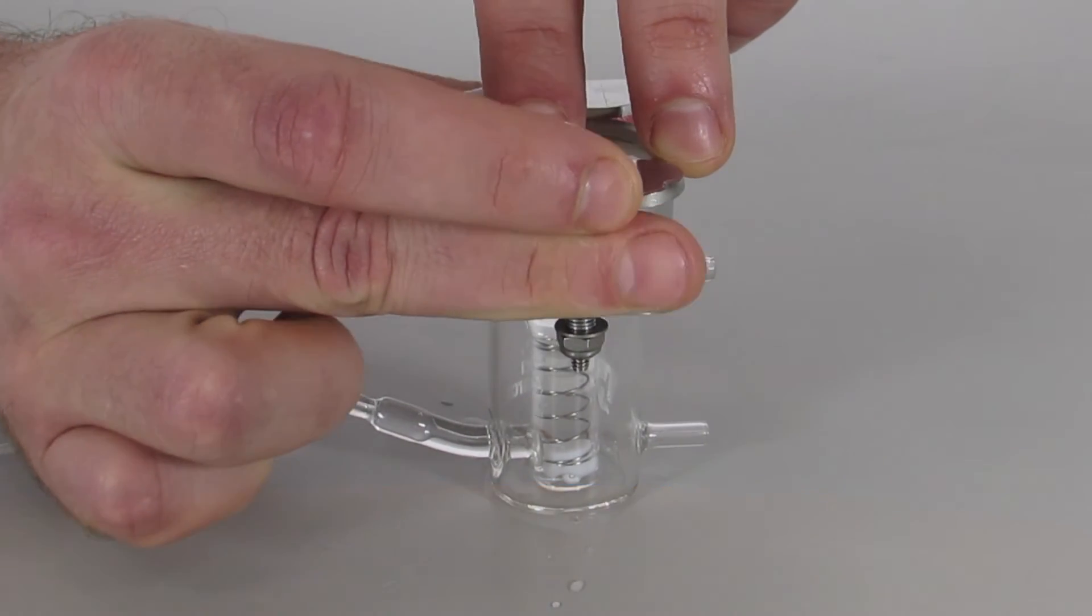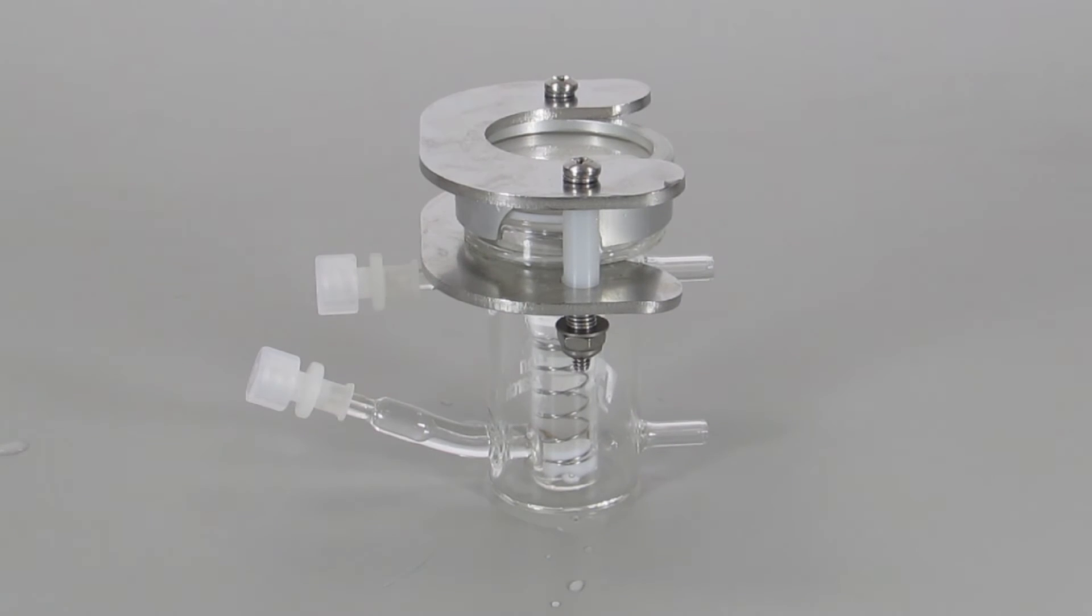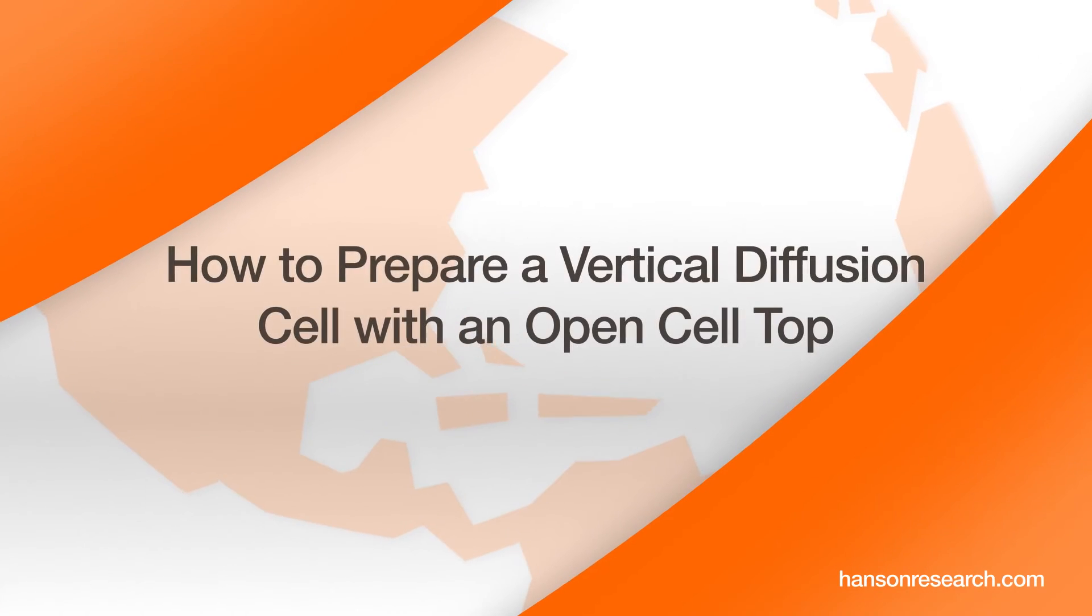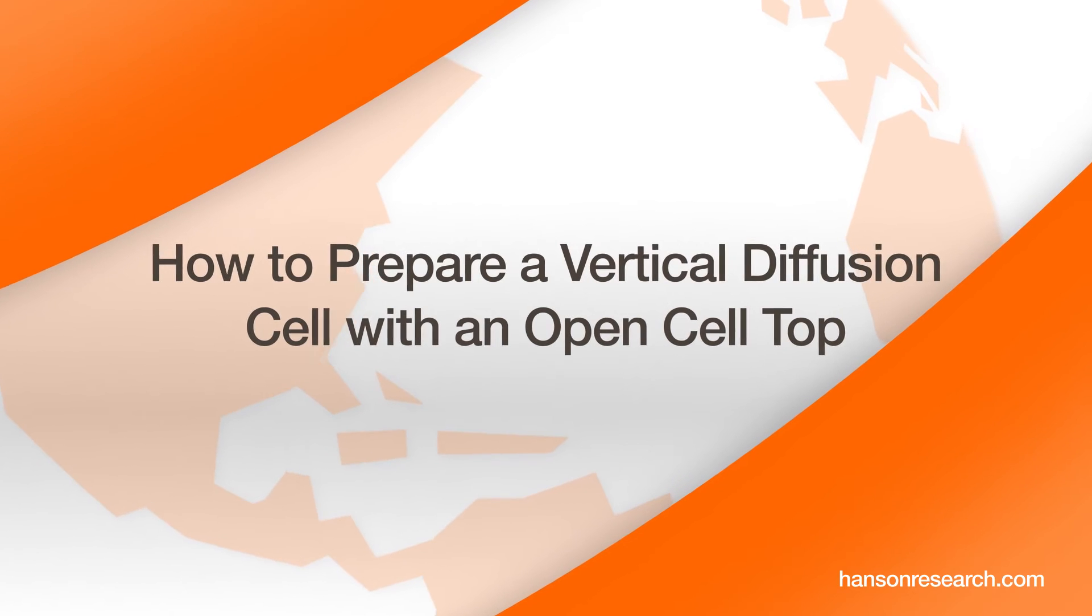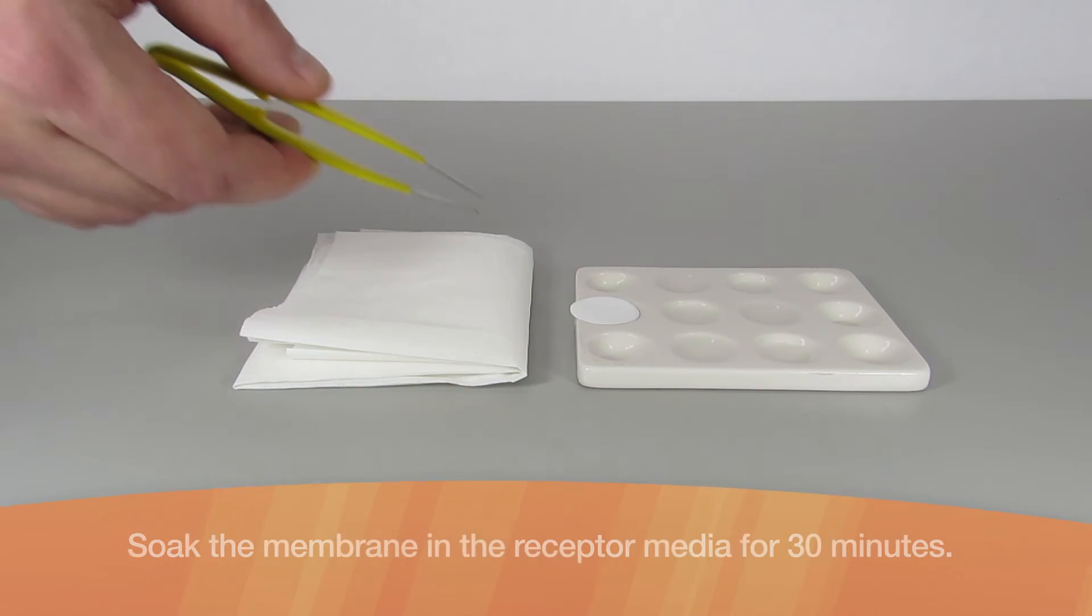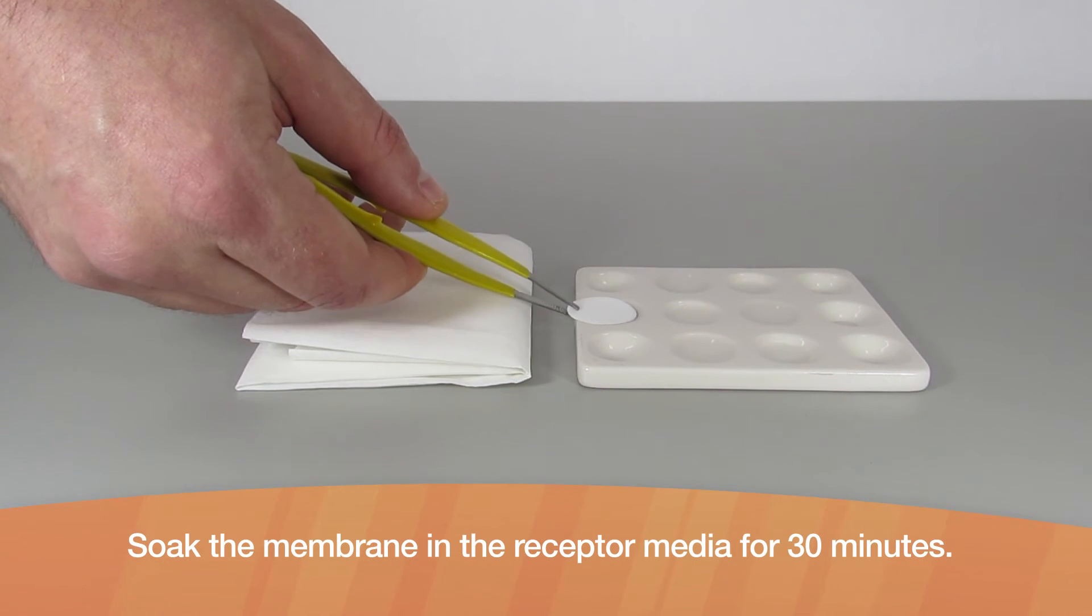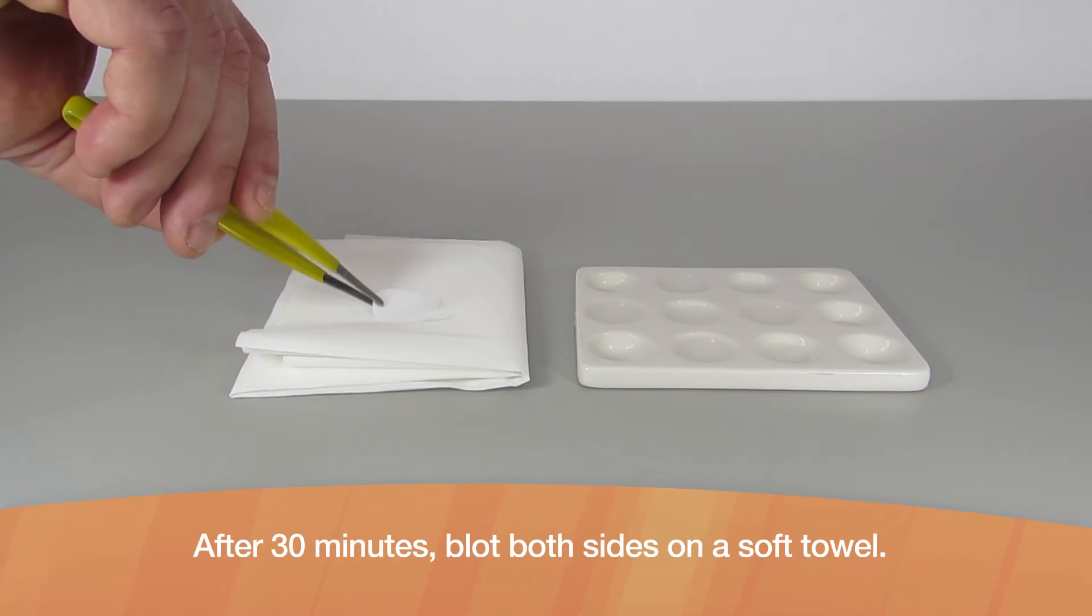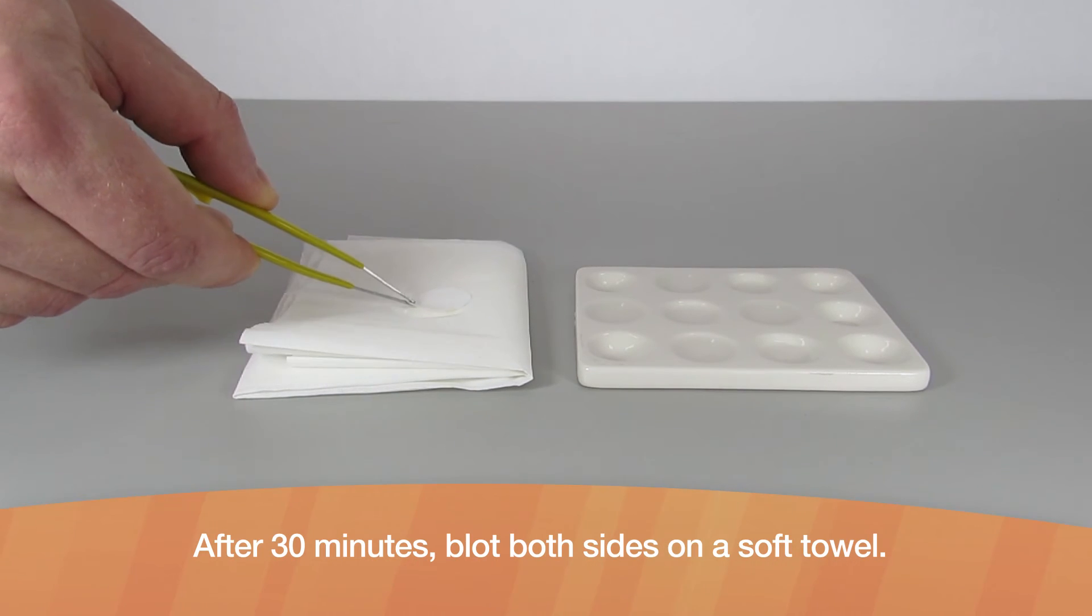How to prepare a vertical diffusion cell with an open cell top. Soak the membrane in the receptor media for 30 minutes. After 30 minutes, blot both sides on a soft towel.